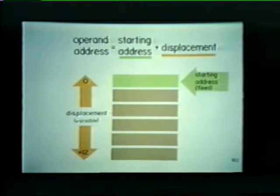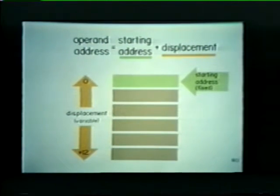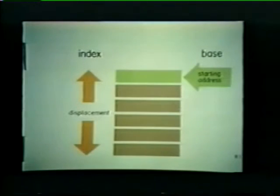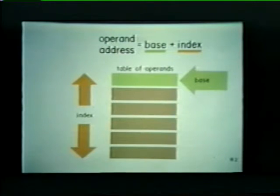Thus, the address of any operand stored in a table can be specified by two components: the starting address of the table, and the displacement of the operand relative to this starting address. Notice that in this example the starting address is a fixed value, whereas the displacement is variable. The fixed starting address is referred to as the base, and the variable displacement is called the index. Consequently, to address any operand in this table, we simply add the base address to the appropriate index value.